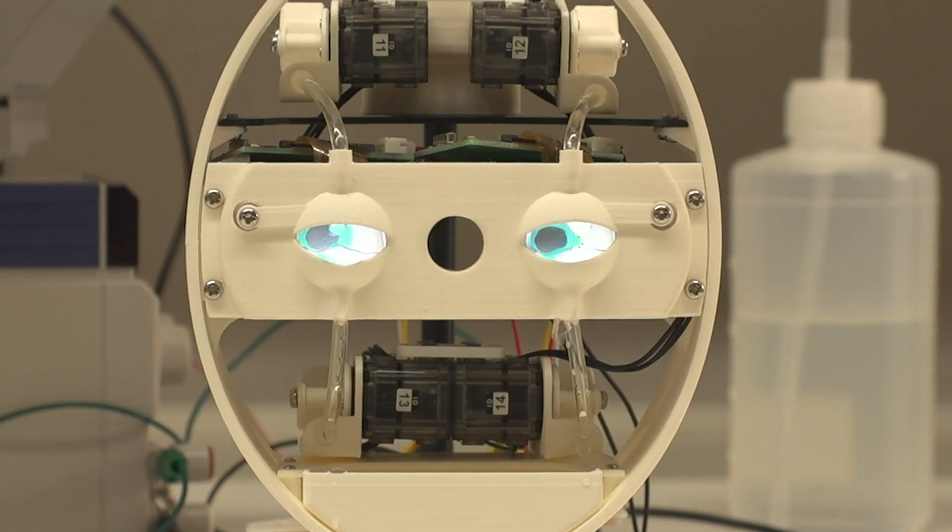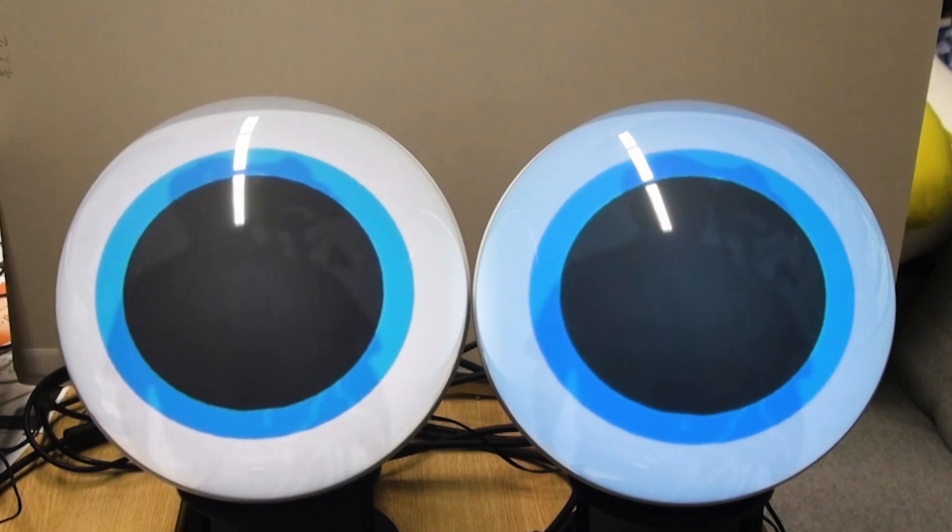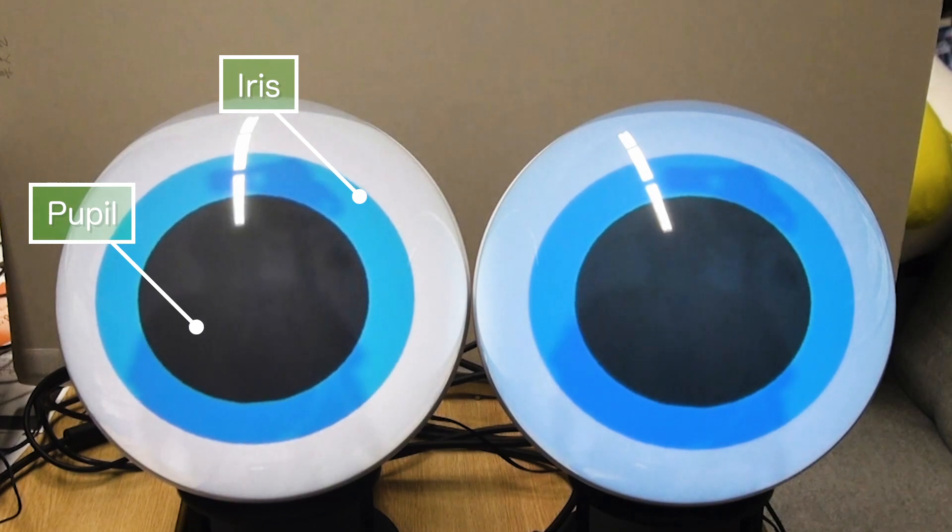This robot demonstrates the ability of the human eye. The white of the eye produces moisture that wets with tears, and the iris expands and contracts the pupil just like the real thing.